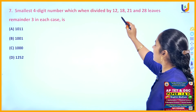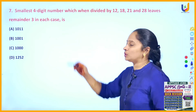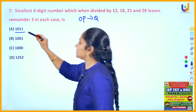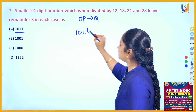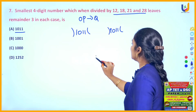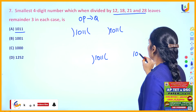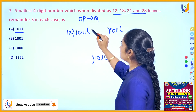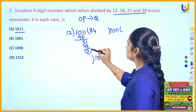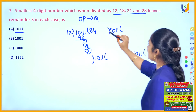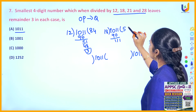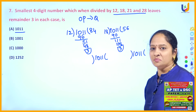The next question: the smallest 4-digit number which when divided by 12, 18, 21 and 28 leaves a remainder 3 in each case. In such questions, it is better to use the option-checking method. The first option is 1011. Dividing by 12: 12 eights are 96, remainder 51; 12 fours are 48, remainder 3 — first condition satisfied. Dividing by 18: 18 fives are 90, remainder 11; 18 sixes are 108, remainder 3 — second condition also satisfied.